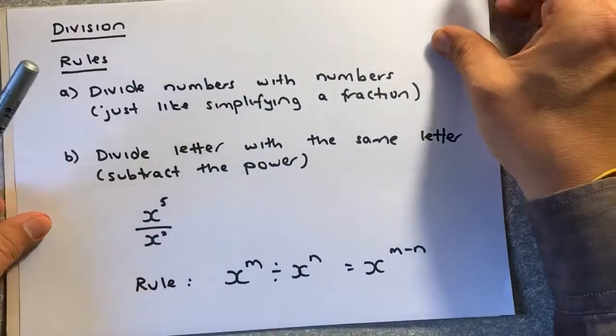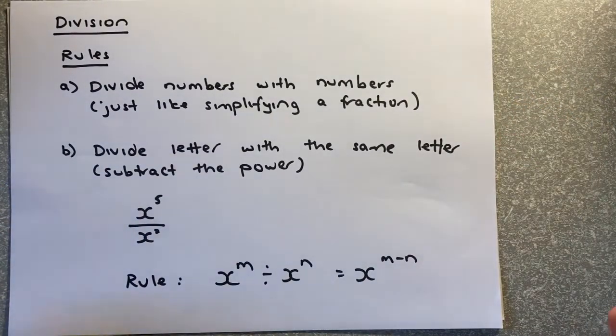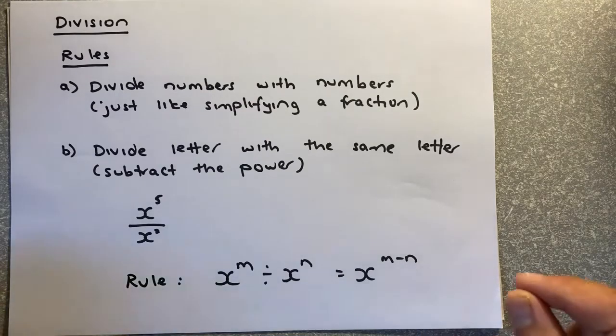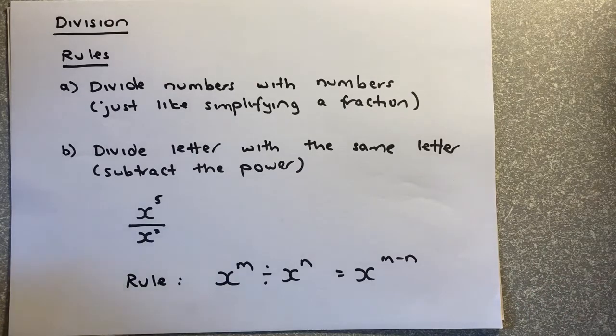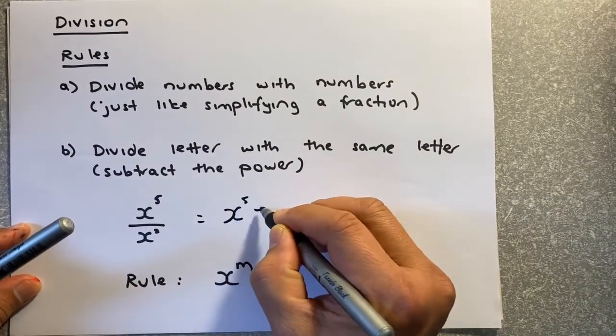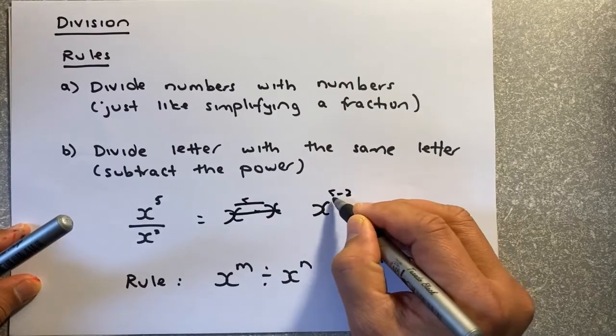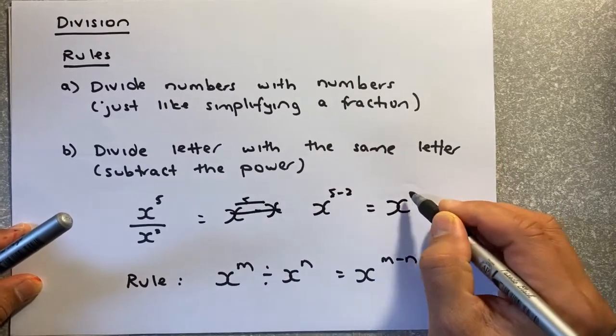Now we shall look at the division. Division apply the same rule. You divide numbers with numbers, just like what you have done with multiplication. But just like simplifying a fraction. Divide letters with the same letter. Just like multiplication. So if we have x5 over x squared, you just take x5 minus 2, and the answer is x cubed.